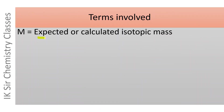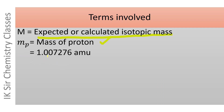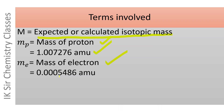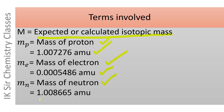M is the expected or calculated isotopic mass. mₚ is the mass of one proton = 1.007276 amu. mₑ is the mass of one electron = 0.0005486 amu. mₙ is the mass of one neutron = 1.008665 amu.